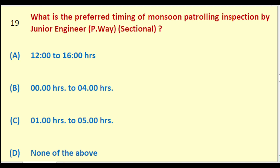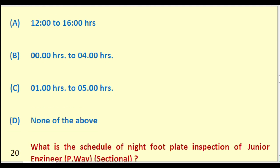What is the preferred timing of monsoon patrolling inspection by Junior Engineer Permanent Way Sectional? Options: 12:00 to 16:00 hrs; 00:00 to 04:00 hrs; 01:00 to 05:00 hrs; none of the above. The right answer is: none of the above.